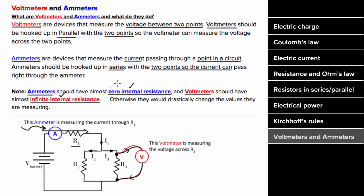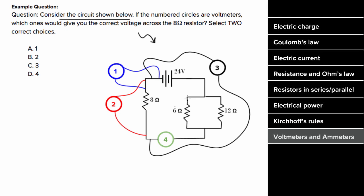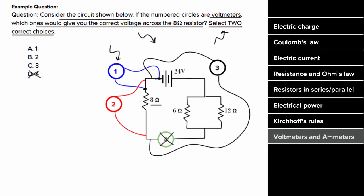So what would an example problem involving voltmeters and ammeters look like? Let's say we have the circuit shown below, and these numbered circles represent possible places we could stick a voltmeter to measure the voltage across the eight ohm resistor. Which two of these voltmeters would correctly give the voltage across the eight ohm resistor? Voltmeter number four is a terrible choice — you never hook up your voltmeter in series with the circuit element. And voltmeter number one is doing nothing really, because it's measuring the voltage between two points in a wire with nothing in between, so the voltage measured should just be zero. The correct choices would be voltmeter number two, which gives the voltage across the eight ohm resistor, and voltmeter number three, which also gives an equivalent measurement of the voltage across the eight ohm resistor.